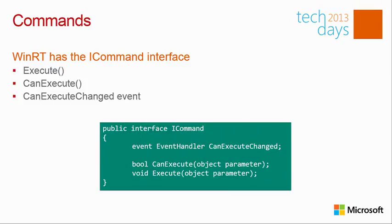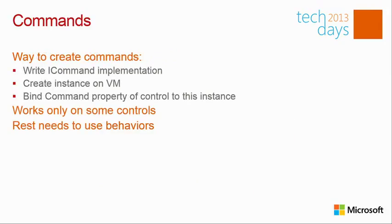You can implement ICommand yourself or use the RelayCommand from MVVM Light, which is what I use. We're going to use MVVM Light throughout this talk, but you can of course do it yourself. Commanding in the view — binding on a specific command exposed by the ViewModel — is only possible on controls deriving from ButtonBase: basically things like Button and CheckBox. For other controls, the command property doesn't exist.